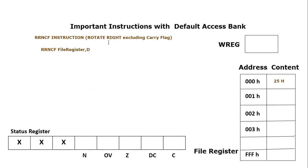The format is quite similar: RRNCF, then the file register, then you have to mention D or the destination. The file register means the location which you want to rotate to the right. Remember, NCF means 'not carry', so the carry flag will not be involved.